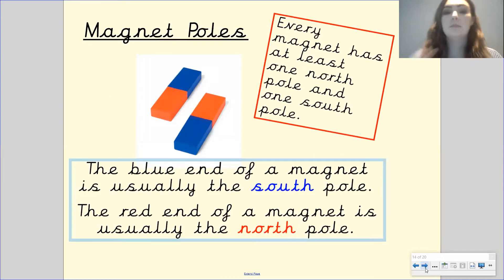So magnet poles. Every magnet has at least one north pole and one south pole which you can see on here. That's the south pole and that's the north pole. The blue end of a magnet is usually the south pole. The red end of the magnet is usually the north pole and sometimes if we have a look at my magnet here. Sometimes the south pole isn't always blue but it does always say whether or not it is south or it is north.